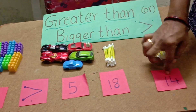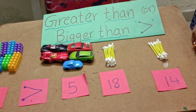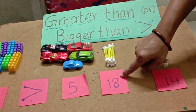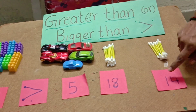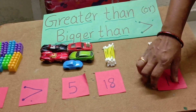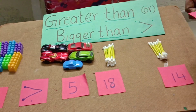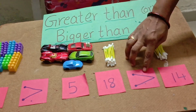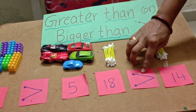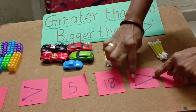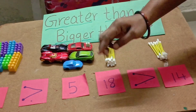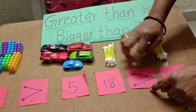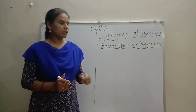Now children, tell me which is the bigger number? 18 is the bigger number. Why? Because 18 always comes after 14, that's why 18 is the bigger number. Now we have to show the symbol. This is the greater than symbol. These two dots always show the left side. 18 is on the left side, so I want to show this on the left side only.